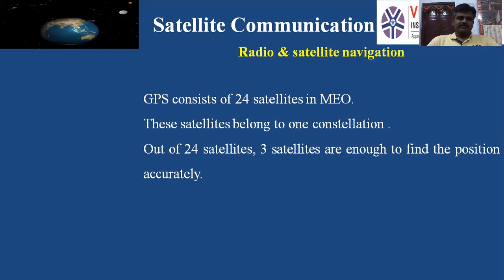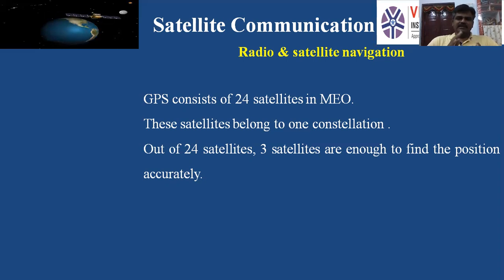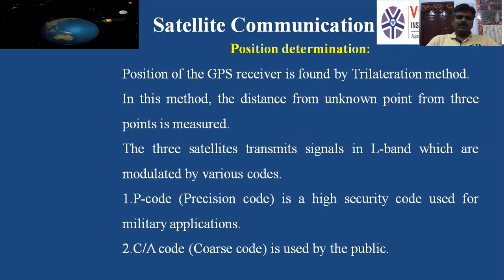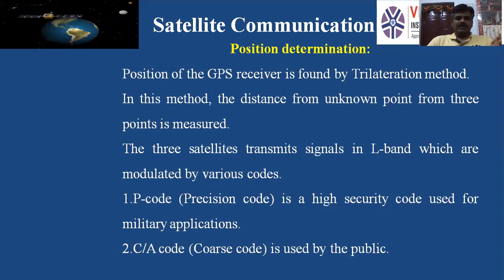The position of the GPS receiver is found by a method called trilateration. In trilateration, the distance from an unknown point to three known points is measured. The three satellites transmit signals in L-band which are modulated by various codes. Among them, two codes are important: P-code and C/A code.